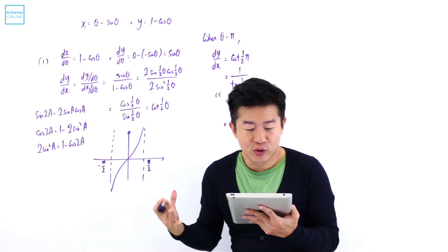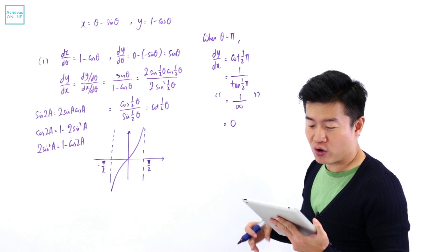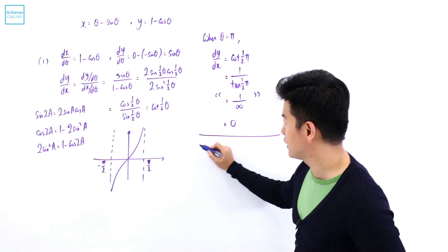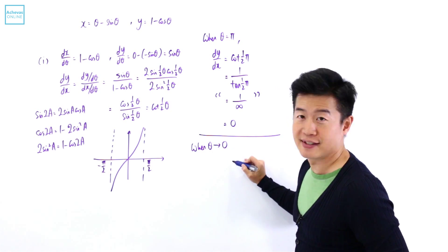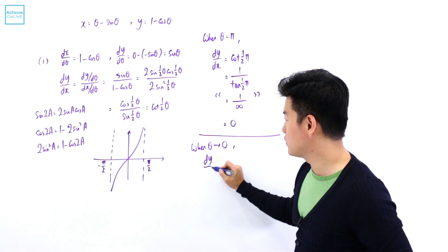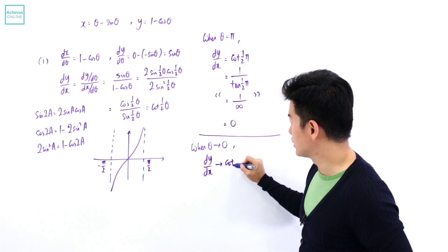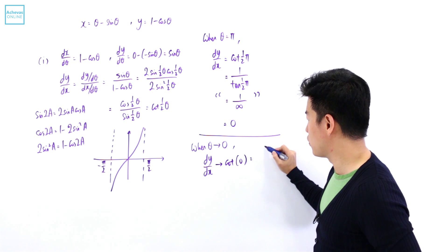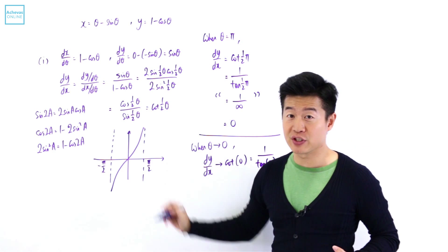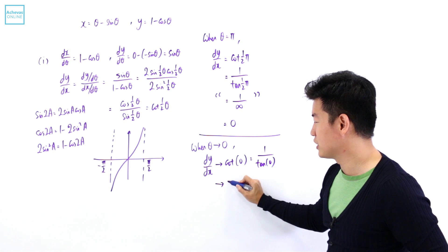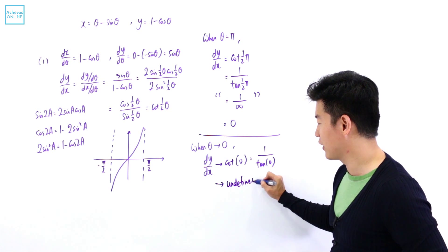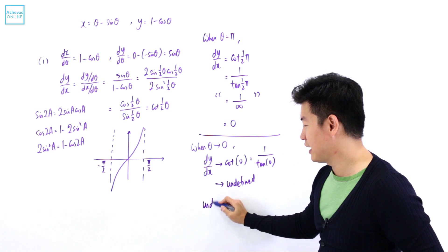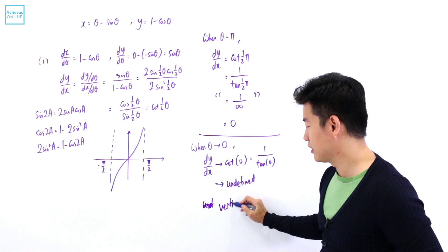The last part asks what happens to the tangents when theta tends to 0 or when theta tends to 2pi. Let's analyze both scenarios. When theta tends to 0, dy/dx tends to 1 over tangent of 0. Since tangent of 0 is 0, dy/dx tends to an undefined value, which means the tangent line is going to be vertical because the gradient is undefined.